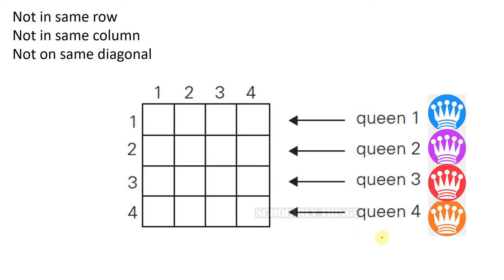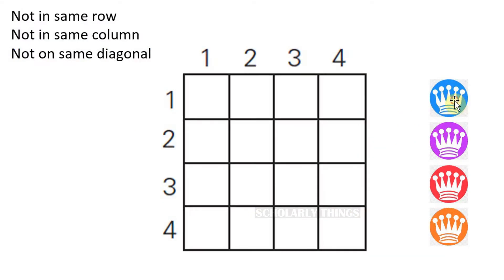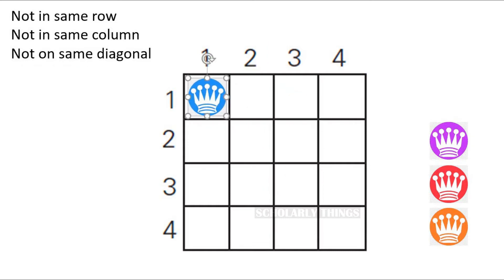We need to place 4 queens on a 4×4 chessboard where none of the queens are in the same row, same column, or on the same diagonal. Queen 1 will be placed in any of the 4 positions in the first row, Queen 2 in the second row, Queen 3 in the third row, and Queen 4 in the fourth row. Let's start with Queen 1 and place it in the first position.